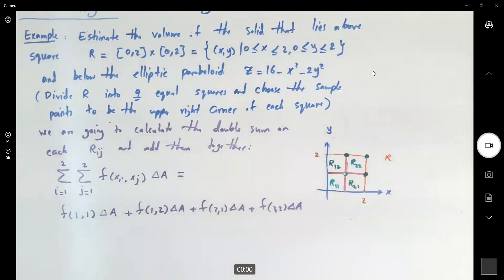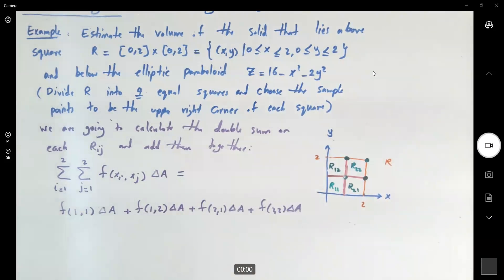So we're going to get an approximation of what's going on, of the possible volume. f of 1 and 1. So f of 1 and 1. We need to plug that in here.